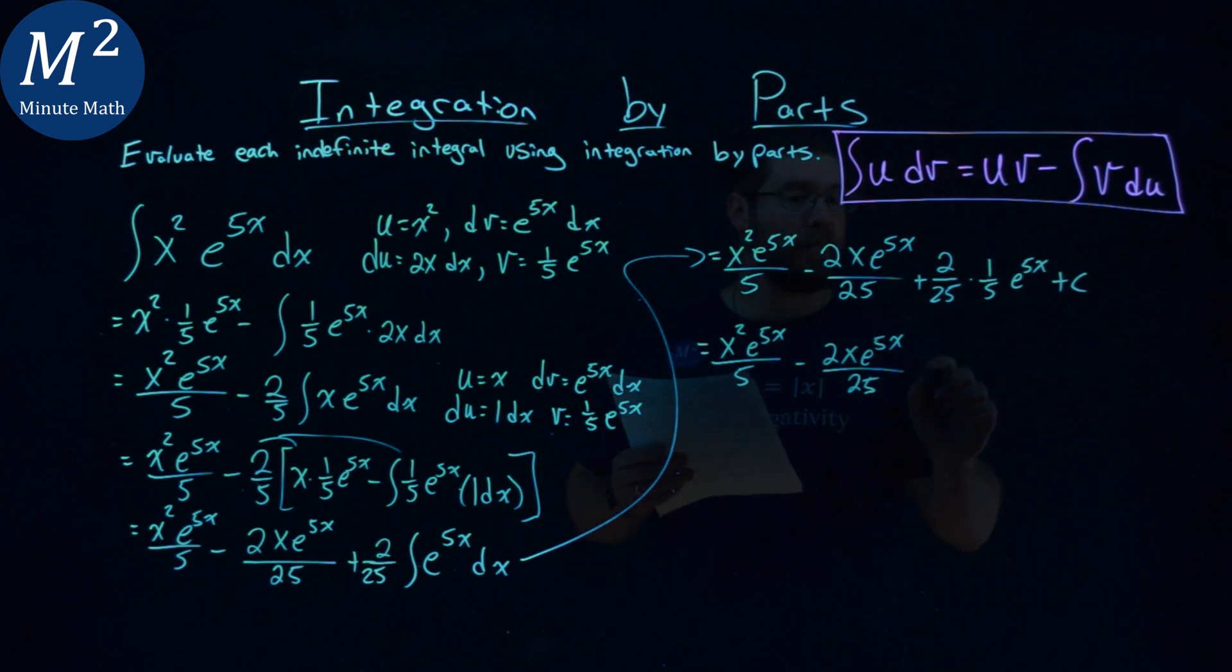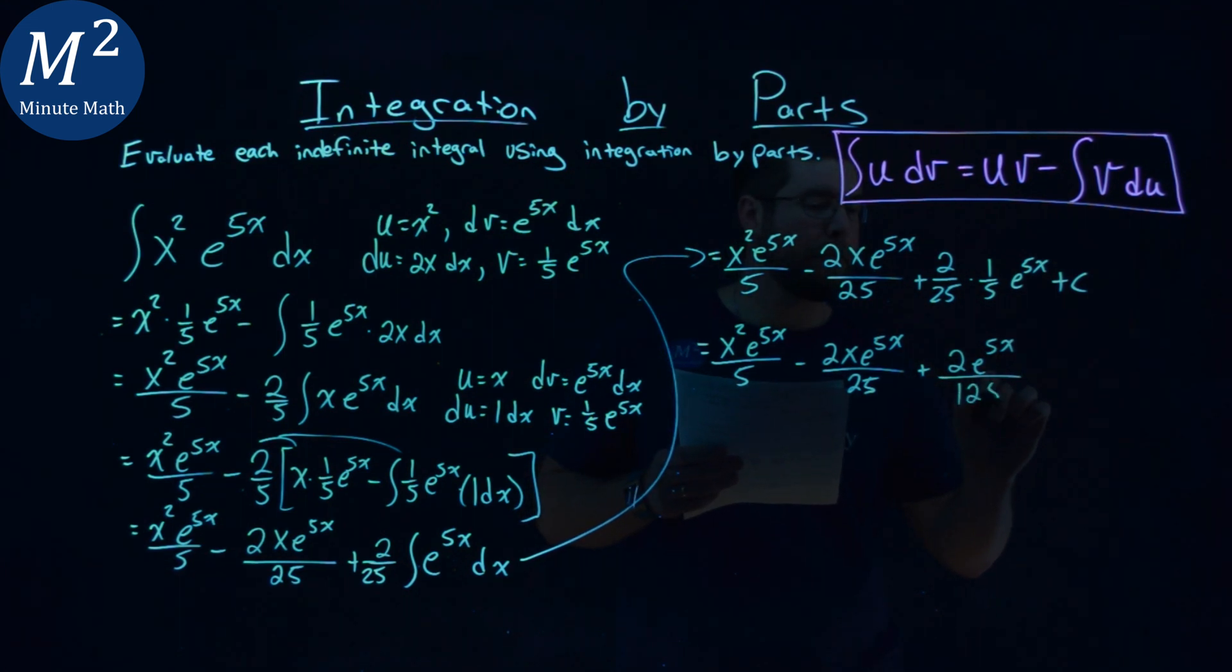got everything lined up here - plus 2 e to the 5x power. 2 times 1 times e to the 5x over 2 times 25 is 125, plus c.